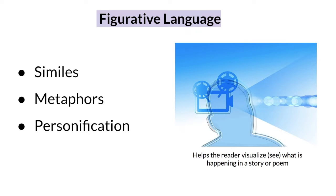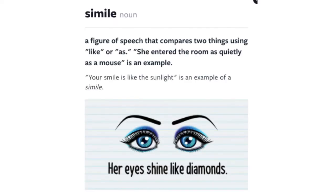In our last lesson, we talked about three types of figurative language: similes, metaphors, and personification. We saw that these tools help the reader visualize or see what is happening in a story or poem. Similes compare two things using the word like or as. For example, her eyes shine like diamonds.